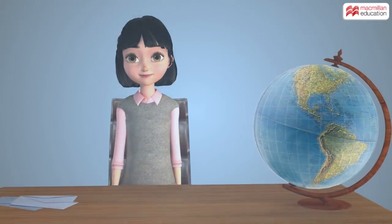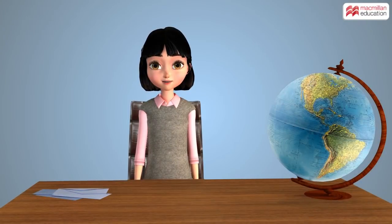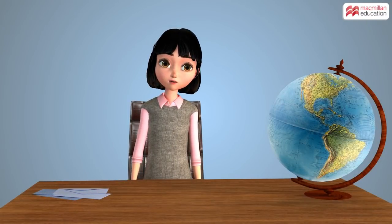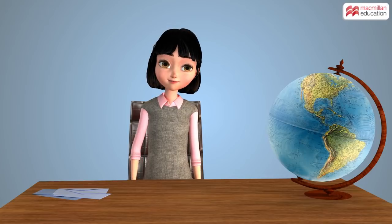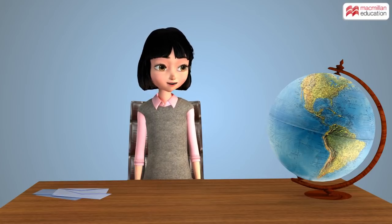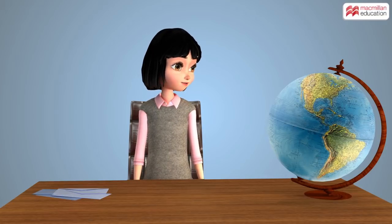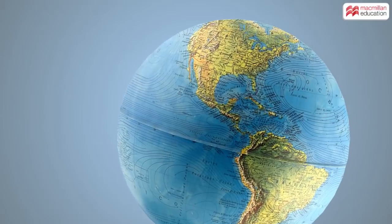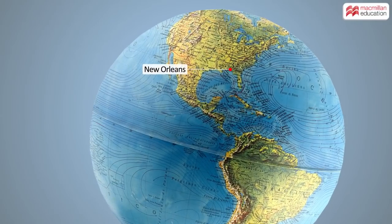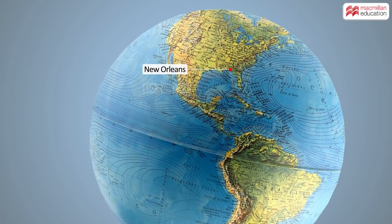So, for locating a place on earth, you need to read the degrees of latitude and longitude. For example, the city of New Orleans is located at 30 degrees north and 90 degrees west.